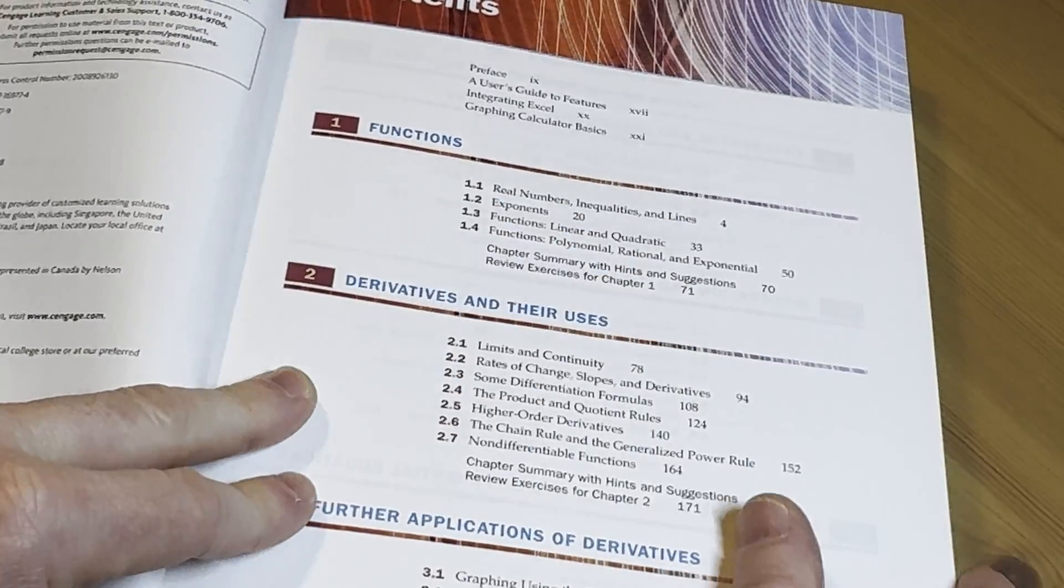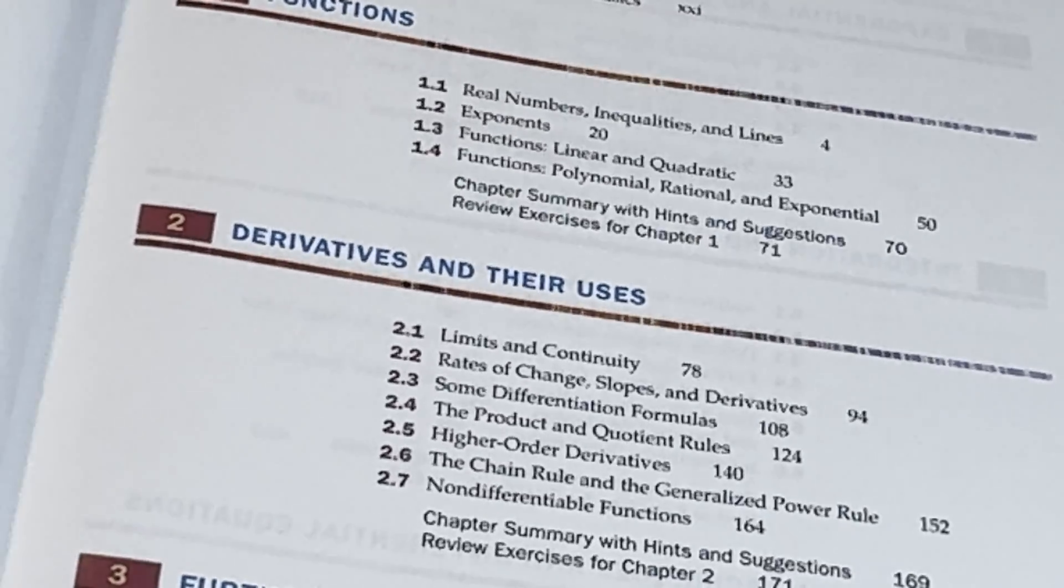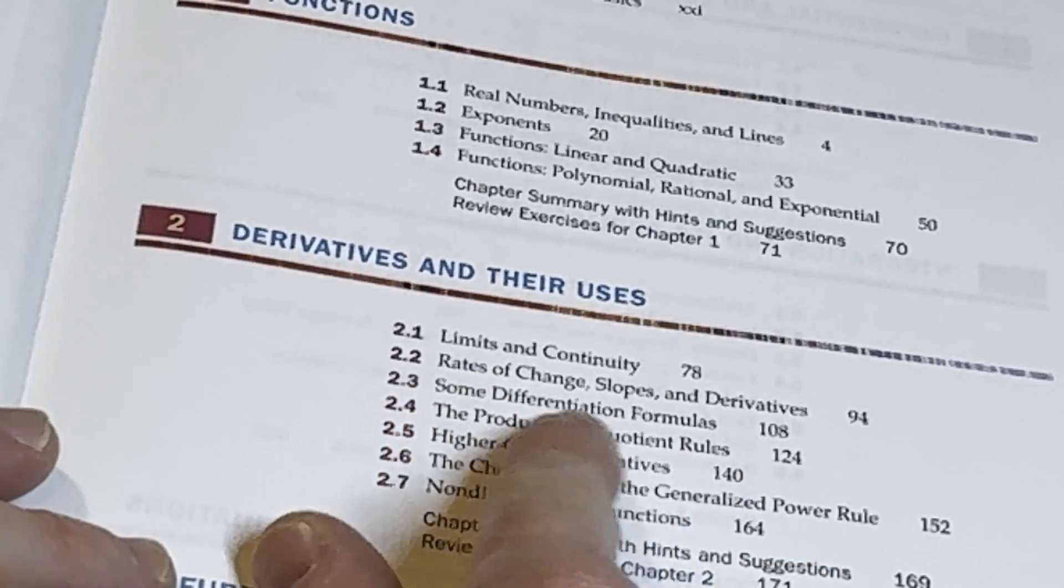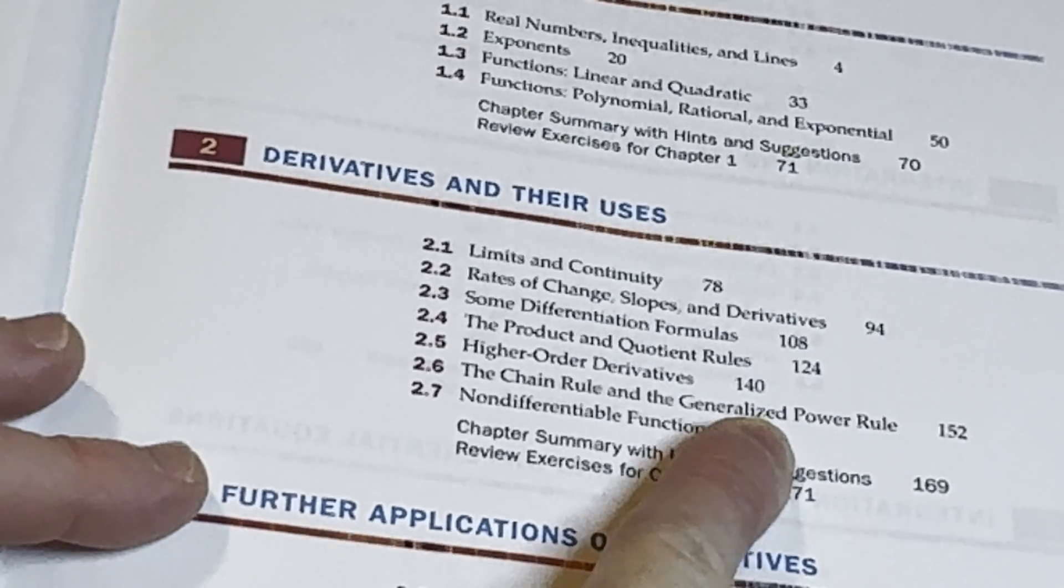Functions. Starts with the basic stuff. Derivatives and their uses. So let's see what we have here. Limits. So all this is Calc 1 stuff. Chain rule.